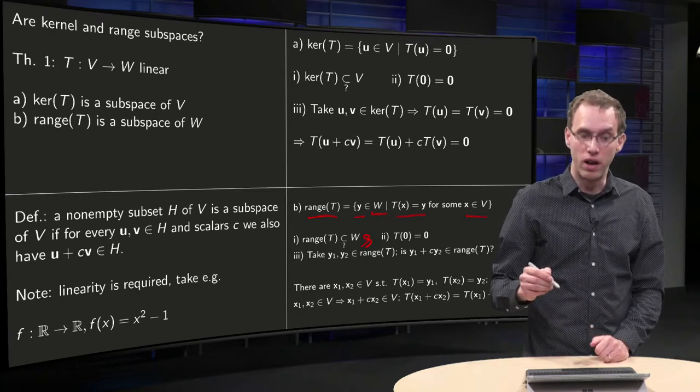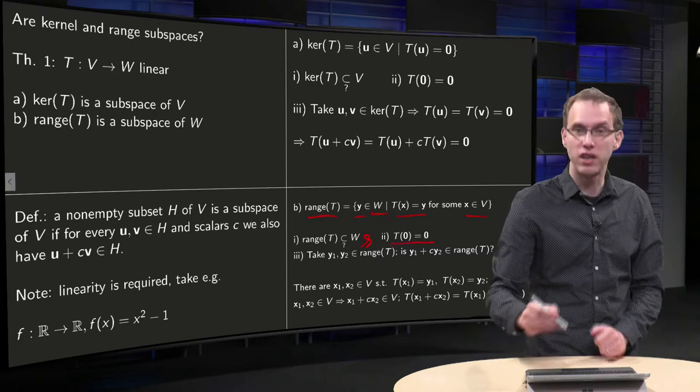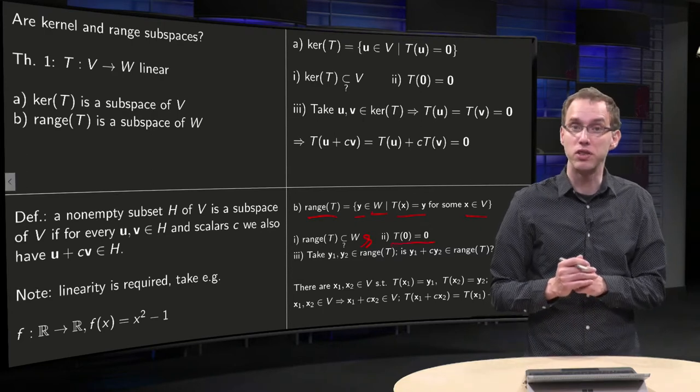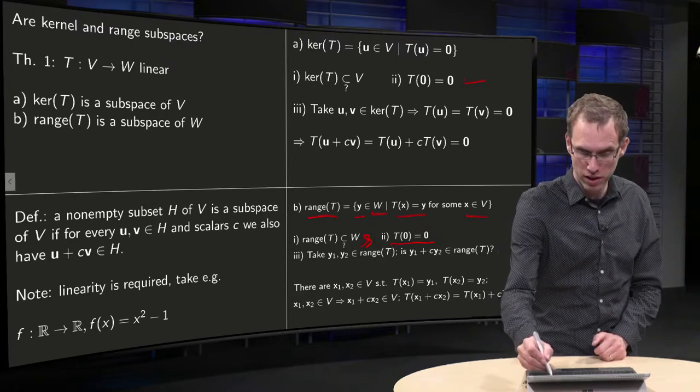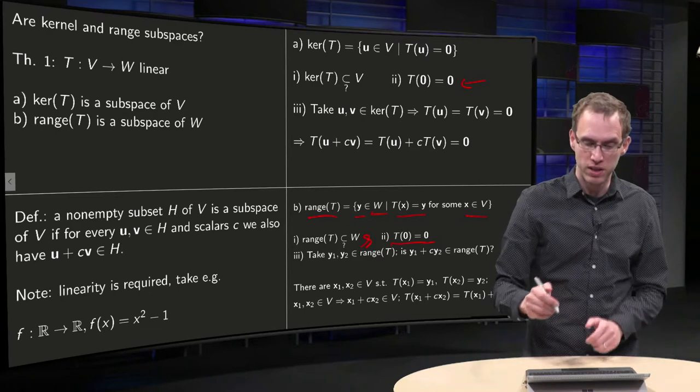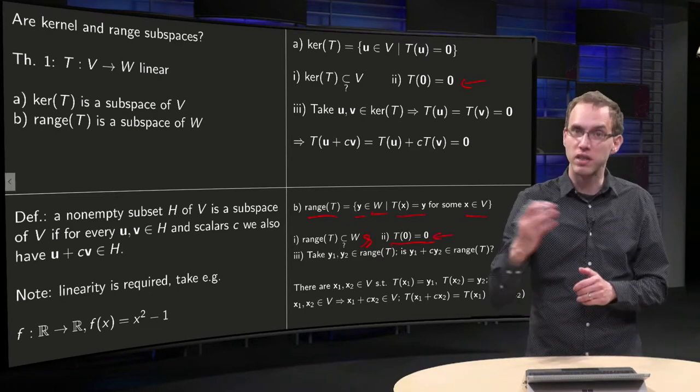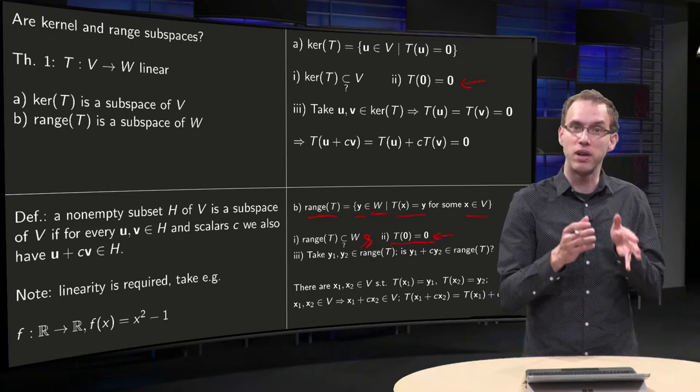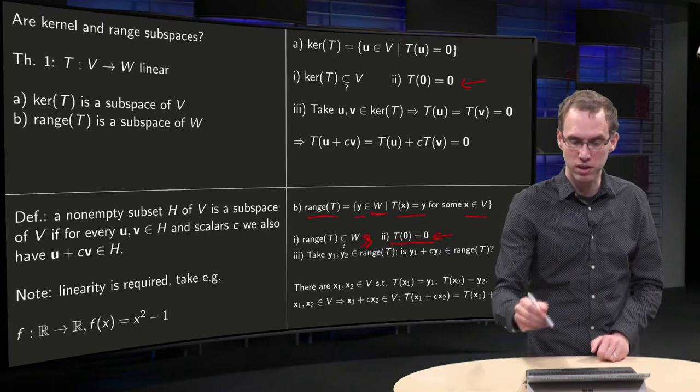We have that again T of zero equals zero, for the same reason as we had over here. That means that your zero vector is automatically also in the range, because you can reach it by the zero vector which is in your domain. So non-empty, that's also okay.